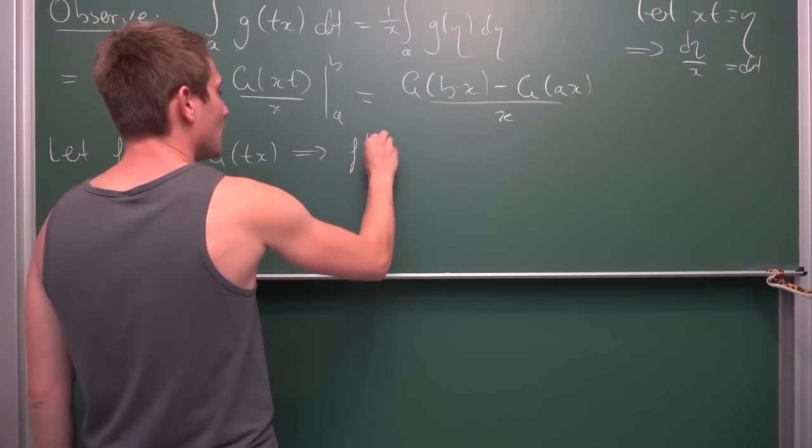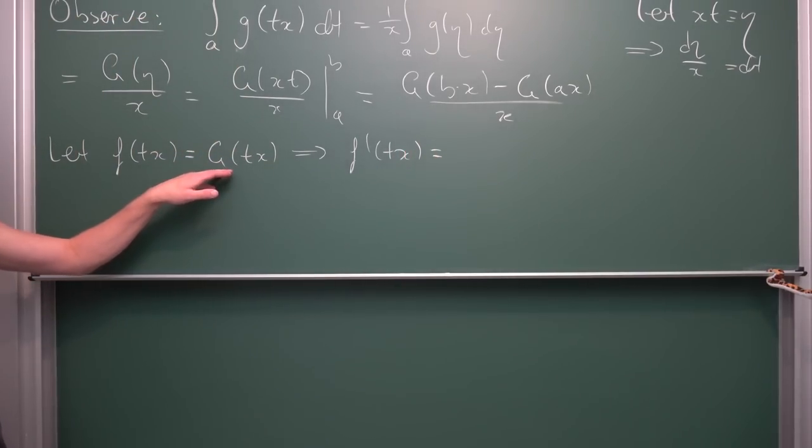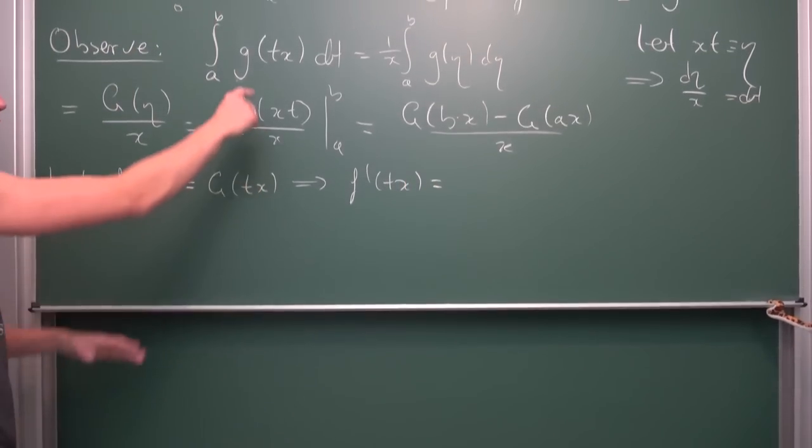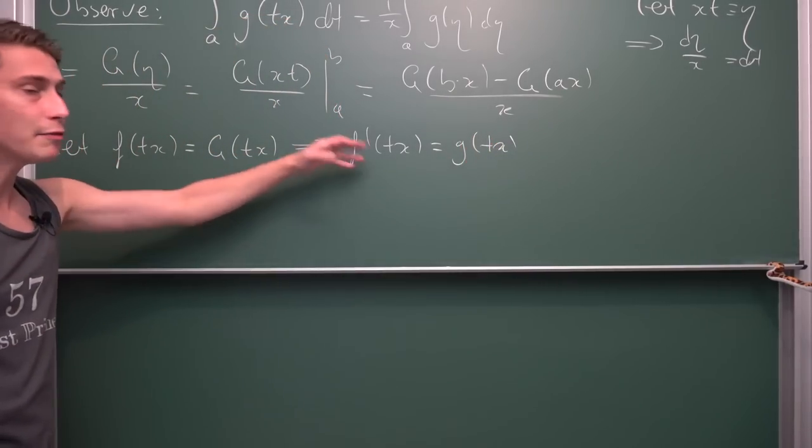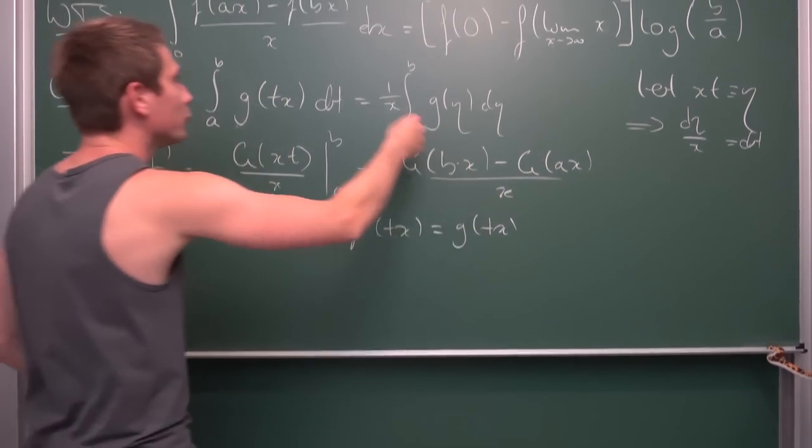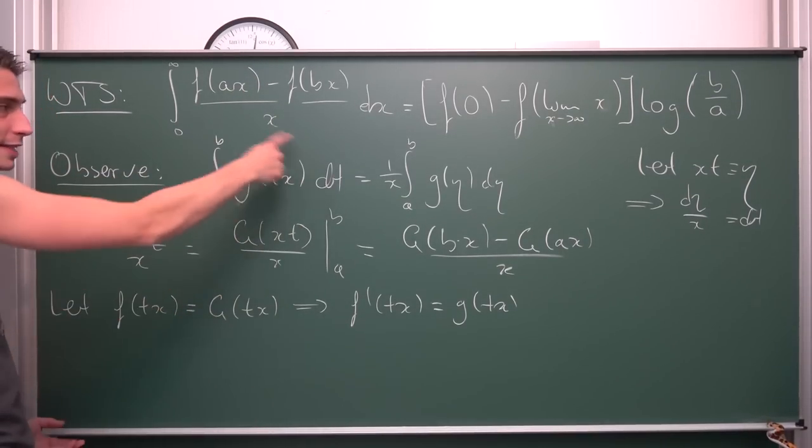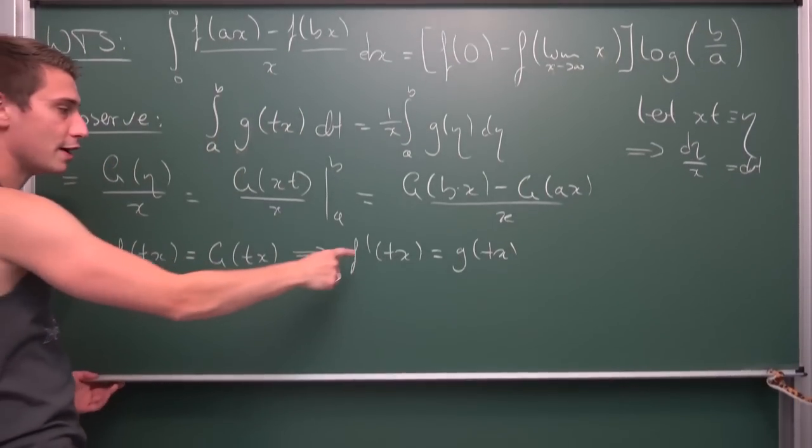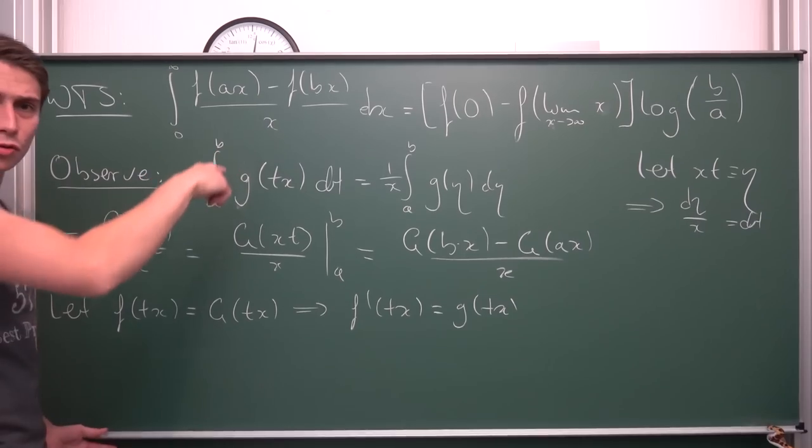And we are differentiating with respect to t here. We are going to get that f'(t·x) is hence nothing but, well, and the derivative of our G is going to be small g. So small g(t·x). And now we can plug everything into here.